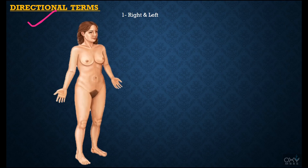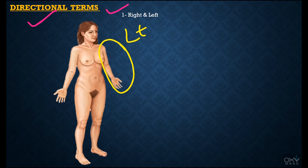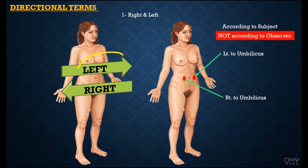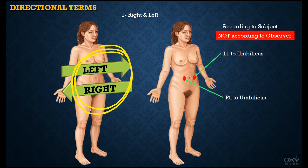Now we will discuss the directional terms. First: right and left. As discussed earlier, this is the left side of the subject and this is the right side. Parts of the body present towards the left side are called left, and parts present towards the right side are called right. Remember: these terms right and left are used according to the subject, not according to the observer. For example, this point is right to the umbilicus and this point is left to the umbilicus — according to the subject, not the observer.